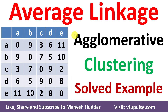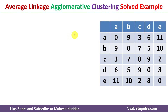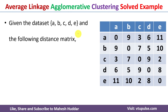Welcome back. In this video I will discuss average linkage hierarchical clustering with the agglomerative method, with the help of a simple solved example. In this case we have been given a dataset with five data points: A, B, C, D, E. Also, the distance matrix is given to us — the distance from A to all other data points, B to all other data points, A to B, A to C, A to D, B to A, B to C, B to D, and so on.